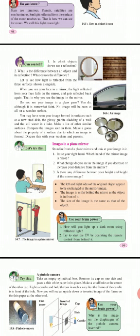Make a list of surfaces that show your image, and guess the property of a surface due to which an image is formed. When looking at images in a plane mirror: stand in front of a plane mirror and look at your image. Raise your right hand — which hand of the mirror image is raised? If you raise your right hand, the mirror image will show the left hand raised. The left and right sides of the original object appear to be exchanged in the mirror image.